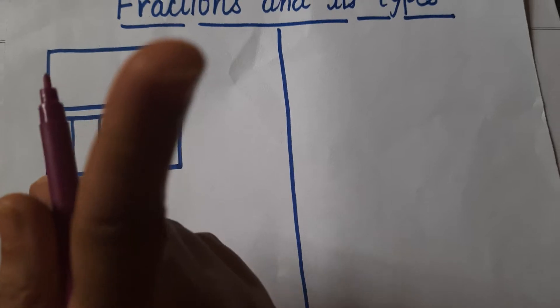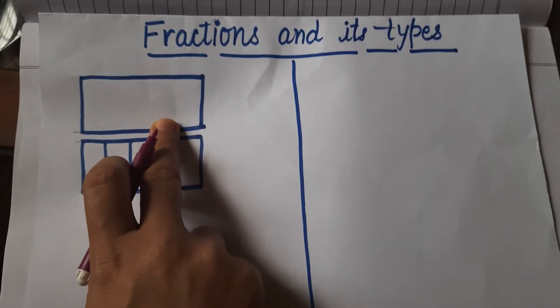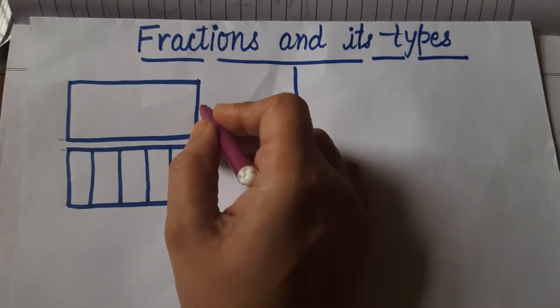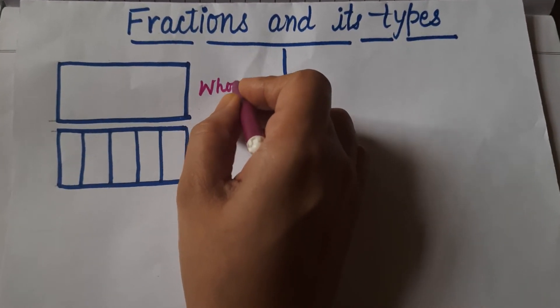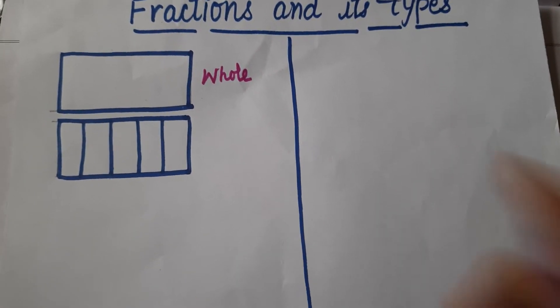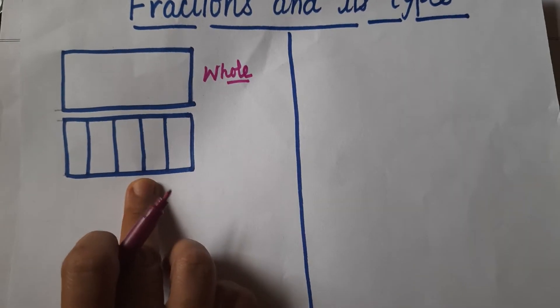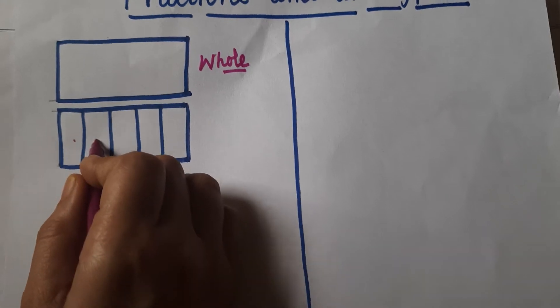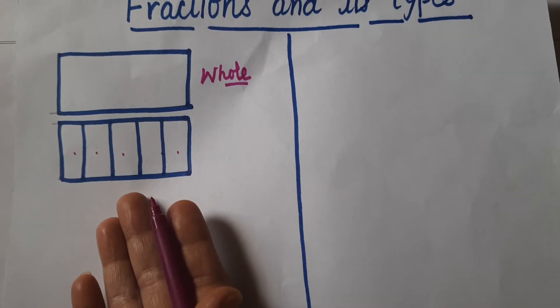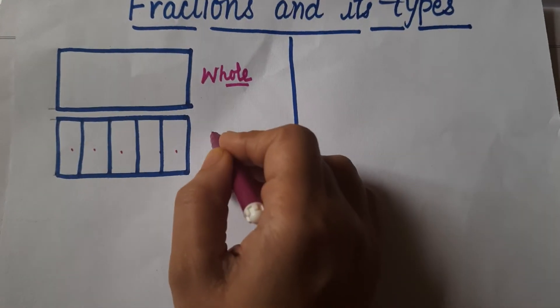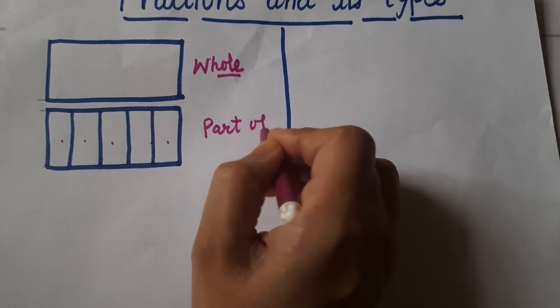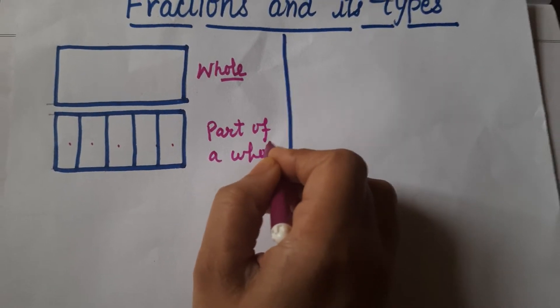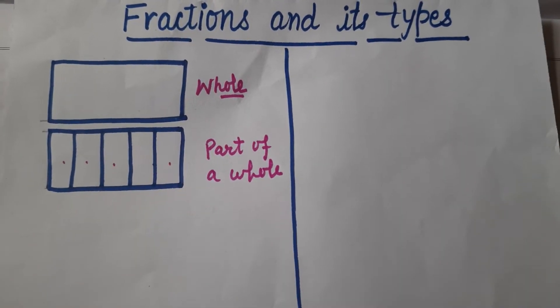Here I have made a rectangle that is equal to one whole rectangle. This rectangle is a whole part — it is a complete figure, or you can say it is a whole. Now I have divided this whole into parts. I have made five parts of it: first, second, third, four, and five. These are the parts of a whole, and these parts are known as fractions.